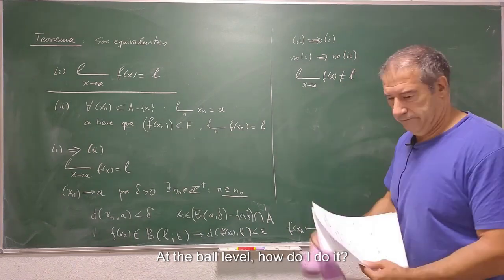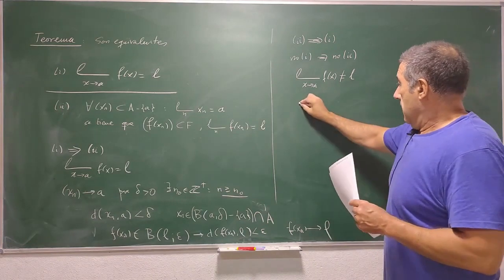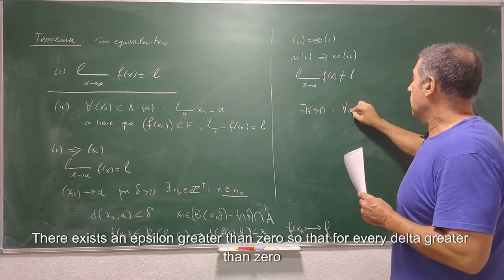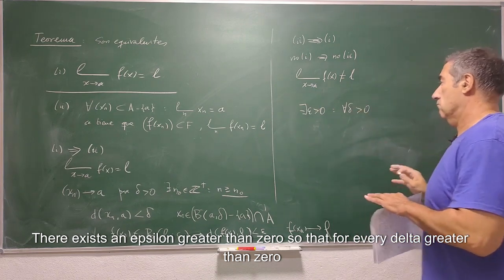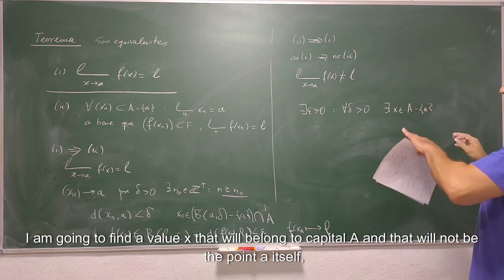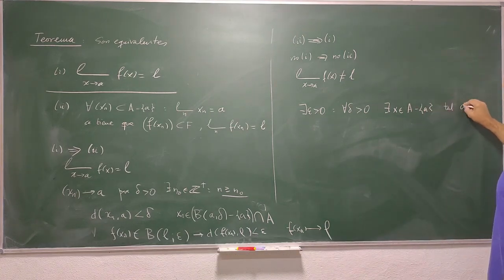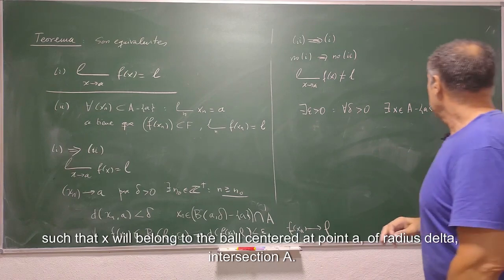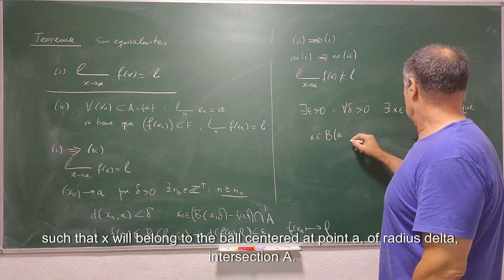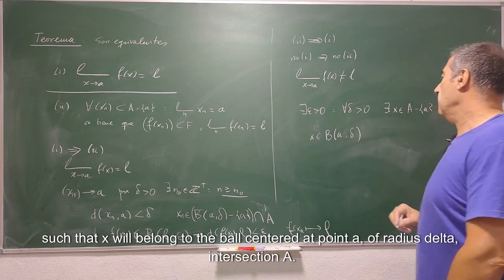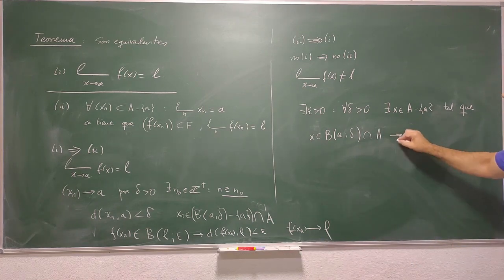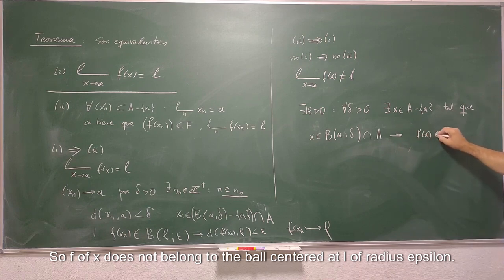At the ball level, how do I do it? There exists an epsilon greater than 0 so that for every delta greater than 0, I am going to find a value x that will belong to capital A and that will not be the point a itself. Such that x will belong to the ball centered at point a of radius delta intersection A.